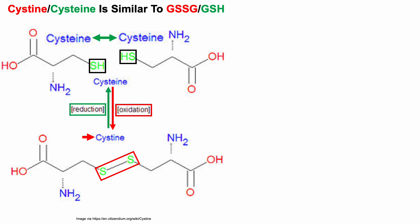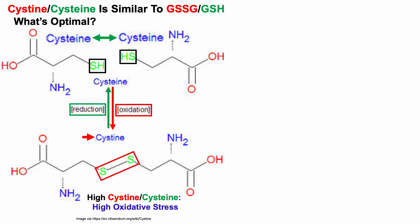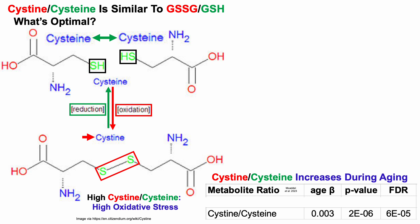As a side note, the oxidized cystine can be reduced back into cysteine — that's a topic for another video. When considering the cysteine to cystine ratio, a relatively high amount of cystine relative to cysteine is indicative of relatively high oxidative stress. In a recently published paper, we can see that the cystine to cysteine ratio increases during aging, as shown by the age beta coefficient being positive — with increasing age, there's an increase in the oxidized to reduced ratio for cystine to cysteine.